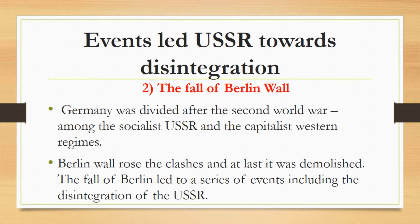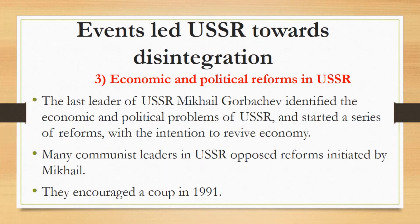Germany was divided after the Second World War among the socialist USSR and the capitalist Western regimes. Berlin, the capital of Germany, was also divided into two parts — one part was under the control of USSR and the other was under the control of the US and its allies. Later, a wall was built to separate the two parts of Berlin. This wall intensified clashes and at last it was demolished. The fall of the Berlin Wall led to a series of events including the disintegration of the USSR.